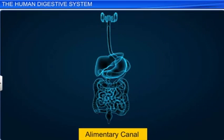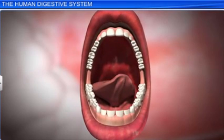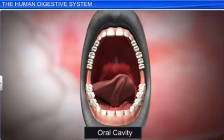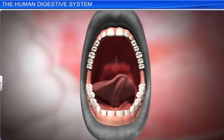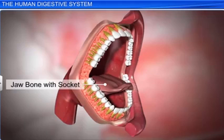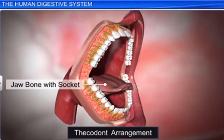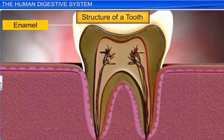If we observe the structure of an alimentary canal, we will see that the mouth, the anterior opening of the alimentary canal, leads to the oral cavity, or buccal cavity, which contains the teeth and the tongue. Each tooth in the cavity is embedded in a socket of the jaw bone, forming a type of attachment known as a thecodont. The hard chewing surface of the tooth, made up of enamel, helps in chewing and breaking down of food.